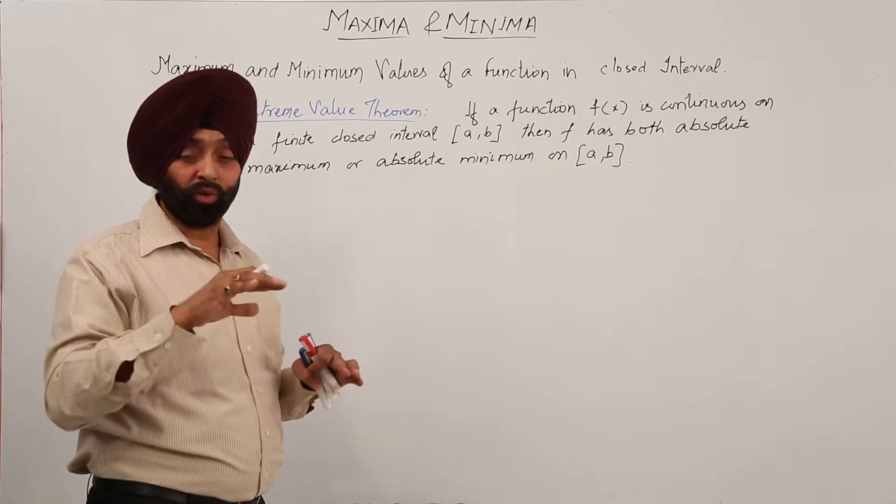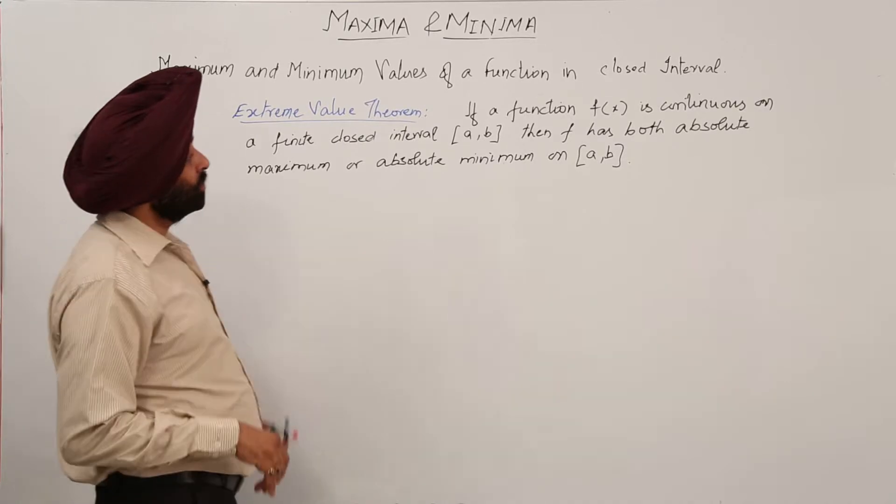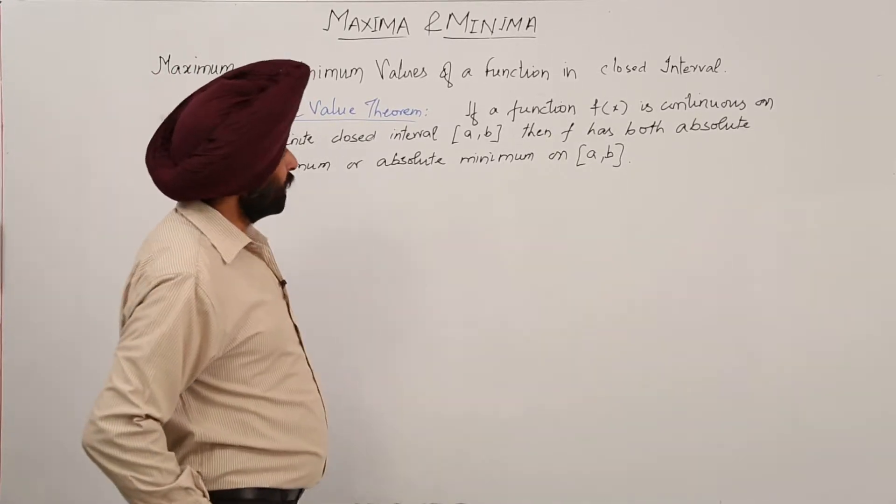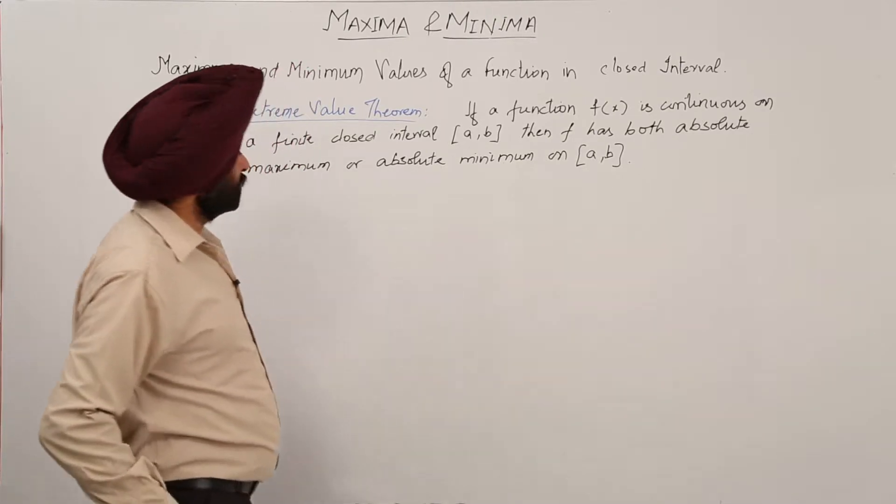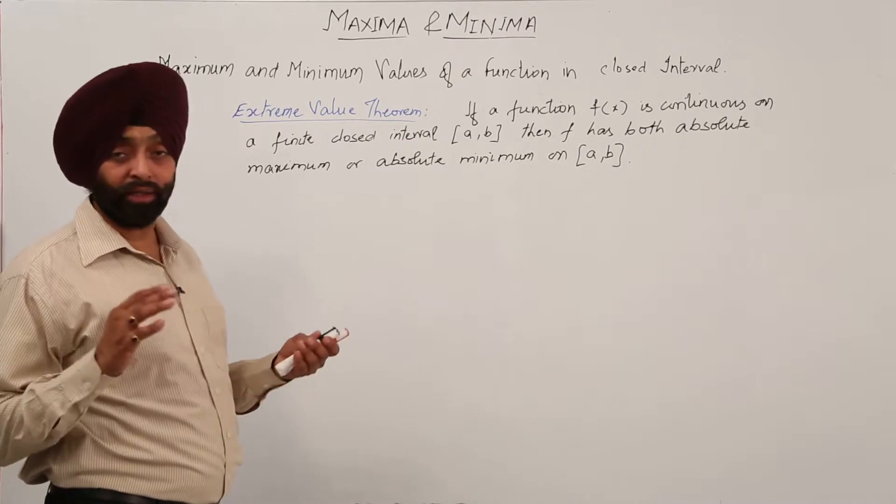Sometimes it is differentiable on the open interval, okay. So when a function is continuous on the finite closed interval [a, b], then f has both absolute maximum or absolute minimum values on that given intervals.